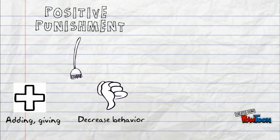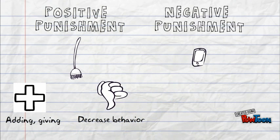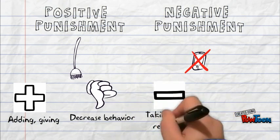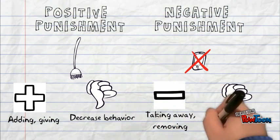If, as a punishment for not finishing your homework, your mom takes away your phone, that is considered a negative punishment. It's negative because something was taken away in order to decrease the behavior.